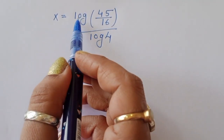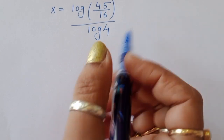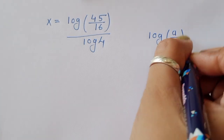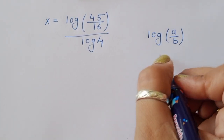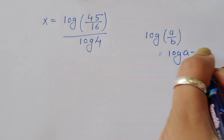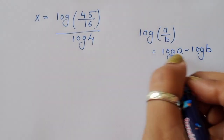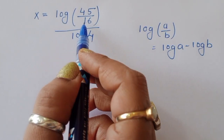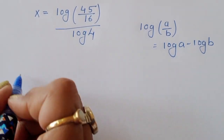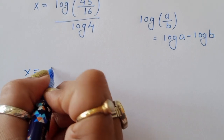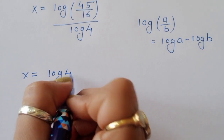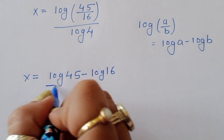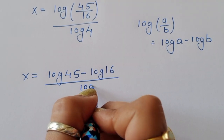Now we apply the formula: log of a upon b equals log of a minus log of b. Using this formula, x is equal to log of 45 minus log of 16, all divided by log of 4.